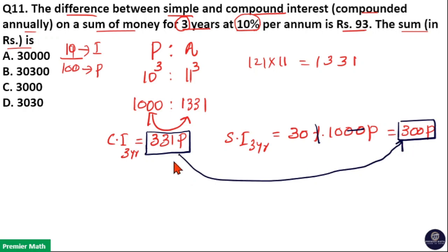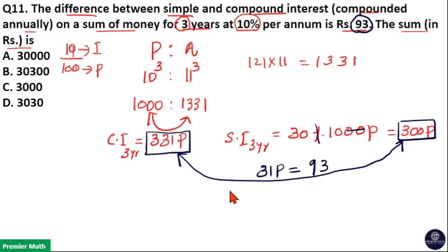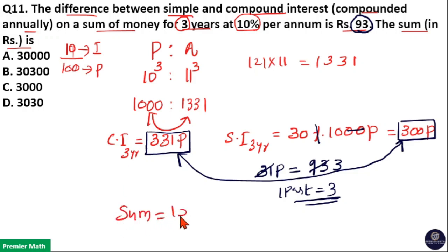Take the difference between 331 parts and 300 parts, which is equal to 31 parts. So 31 parts in the question is given as 93 rupees. That is, the difference between simple interest and compound interest is 93 rupees. Here, 31 parts is the difference in ratio but the actual difference is 93 rupees. So 31 parts is 93, that means 1 part is equal to 3 (since 31 goes 3 times into 93). If 1 part is 3, then sum is equal to 1000 parts, which equals 3000. So 3000 is the original sum.